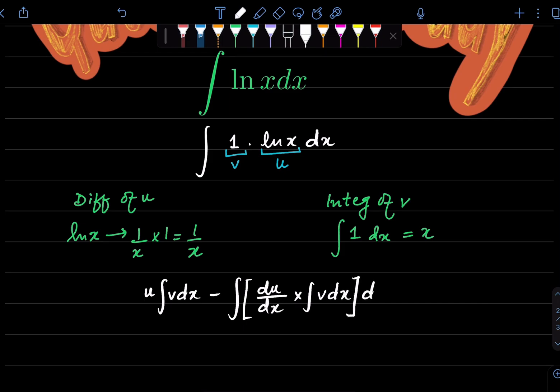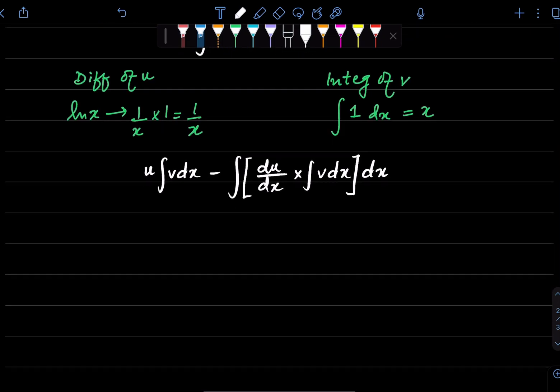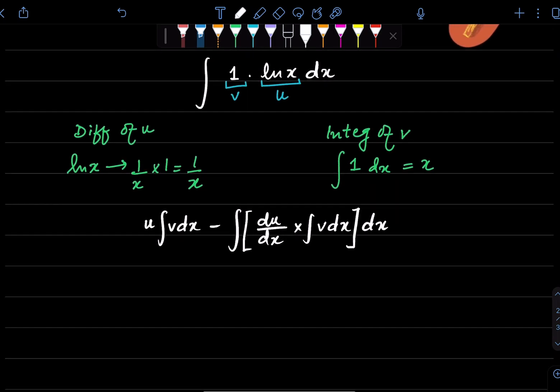Square bracket close and you integrate the whole product. Now we're just going to substitute the values over here. U is ln x times integral of v is x minus integration sign. Now the product is differentiation of u is 1 upon x times integral of v is x.